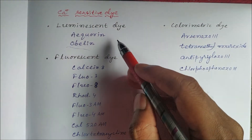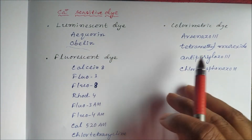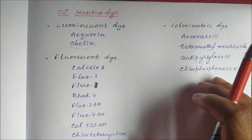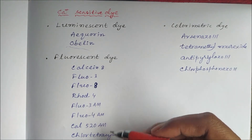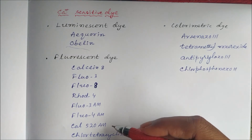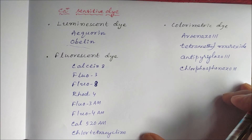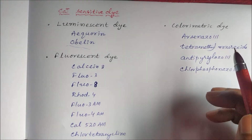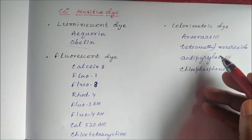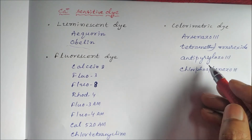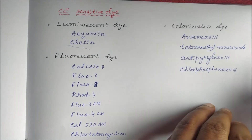The calcium-sensitive dye can be of three types: luminescent dyes, for example aequorin and obelin; fluorescent dyes such as calcein-8, fluo-3, fluo-8, rhod-4, fluo-3 AM, fluo-4 AM, calcein 5/20 AM, and chlortetracycline; and colorimetric dyes like arsenazo, tetramethylmurexide, antipyryl azo, and chlorphosphonazo.